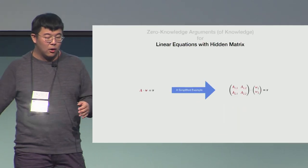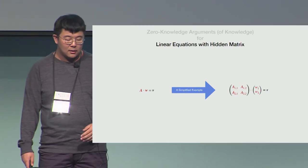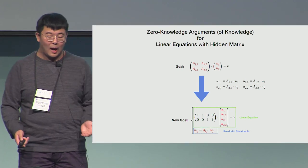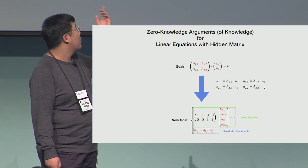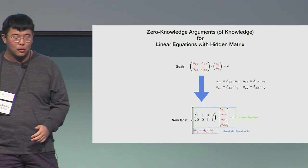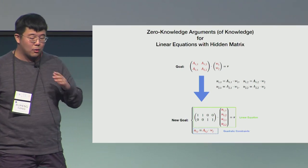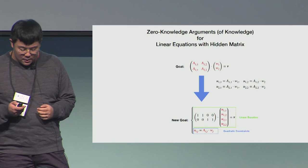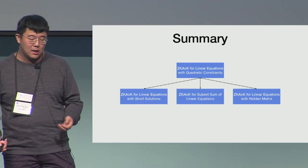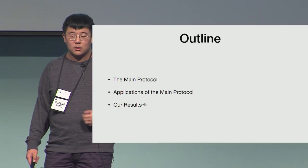Next, we prove linear equations with a hidden matrix, where the protocol should protect both the matrix A and the witness W. For a simplified 2x2 matrix A, let u_ij equal a_ij times w_j. Then v1 equals u11 plus u12, and v2 equals u21 plus u22, transforming the linear equation with hidden matrix into a linear equation with a public matrix. The correctness of each u_ij can be argued with quadratic constraints, so again our main protocol handles this. To summarize, from our main protocol we can construct zero-knowledge arguments for these three basic lattice relations.